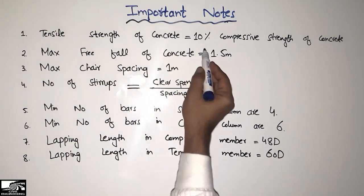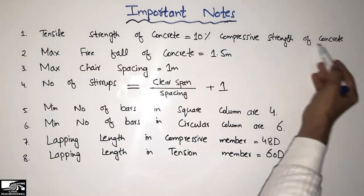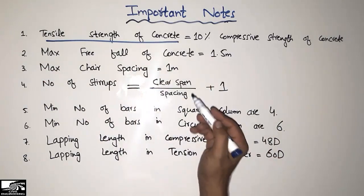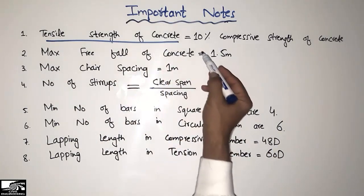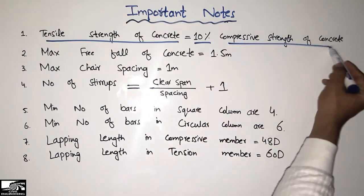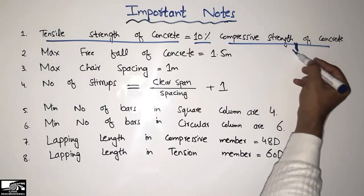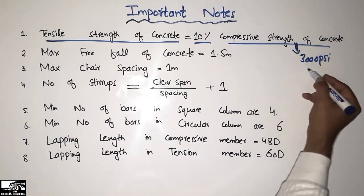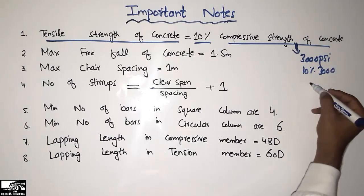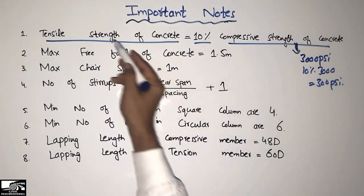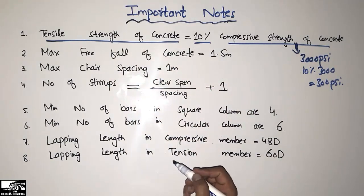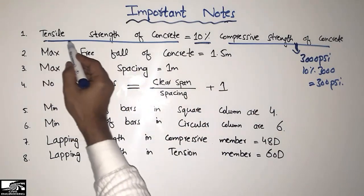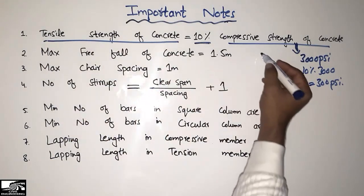The first point is that the tensile strength of concrete is 10% of the compressive strength of concrete. Usually people don't know about the tensile strength of concrete. It can be determined by taking 10% of the compressive strength. For example, if the compressive strength is 3000 psi, its tensile strength will be 10% of 3000, which comes out to 300 psi. This general range is given by the American Concrete Institute codes.